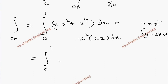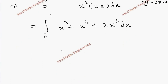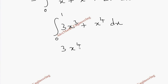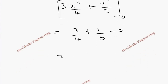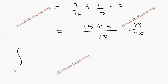Combining terms: integral from 0 to 1 of (3x³ plus x⁴) dx. On integration this gives 3x⁴/4 plus x⁵/5, evaluated from 0 to 1. Substituting the upper limit: 3/4 plus 1/5. Taking LCM of 20 gives 15 plus 4, which is 19/20.